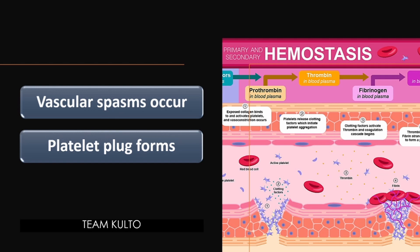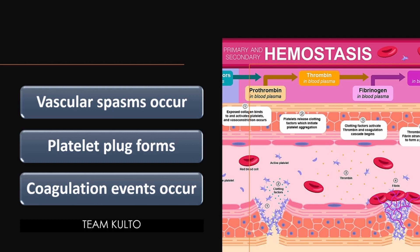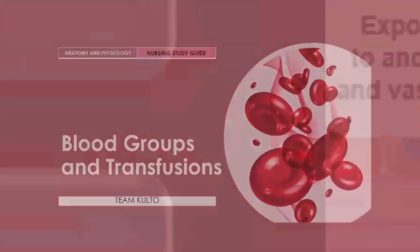Second, a platelet plug forms — injury to the lining of vessels exposes collagen fibers, platelets adhere to the damaged site, and a platelet plug forms. Third, coagulation events occur — the injured tissues release tissue factor (TF), and PF3, a phospholipid that coats the surface of platelets, interacts with TF, vitamin K, and other blood clotting factors. This prothrombinase activator converts prothrombin present in the plasma to thrombin — an enzyme. Thrombin then joins soluble fibrinogen protein into long, hair-like molecules of insoluble fibrin, which forms the meshwork that traps RBCs and forms the basis of the clot. Within the hour, the clot begins to retract, squeezing serum from the mass and pulling the ruptured edges of the blood vessel closer together.